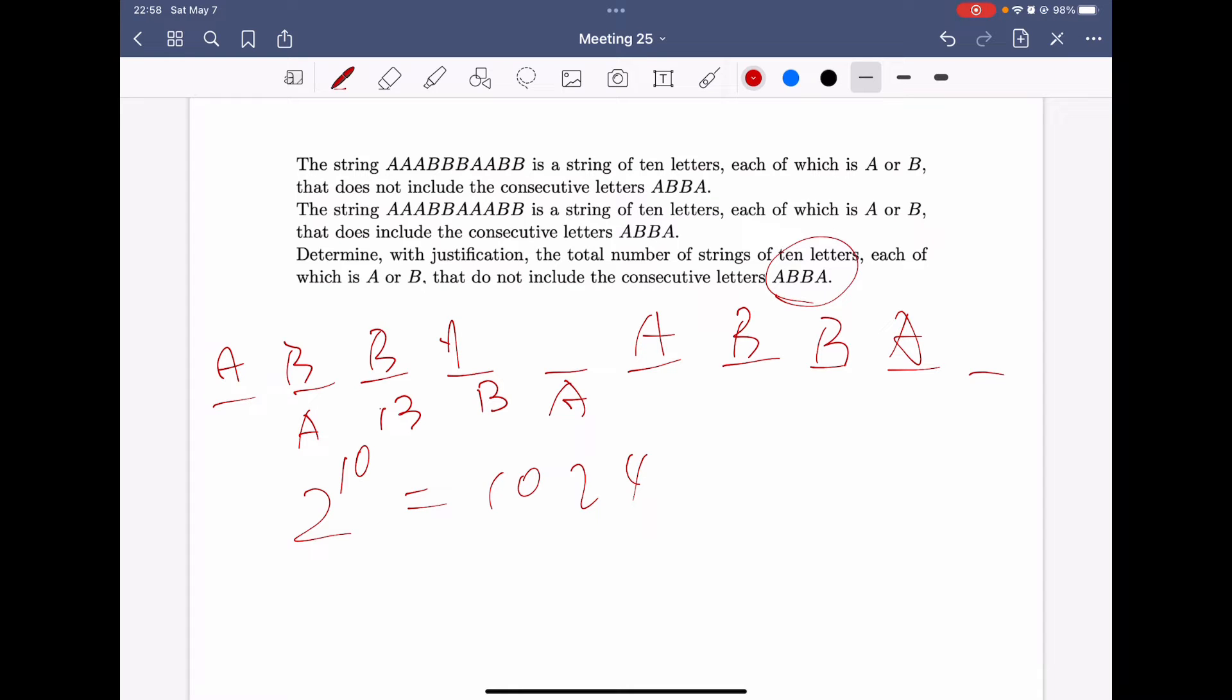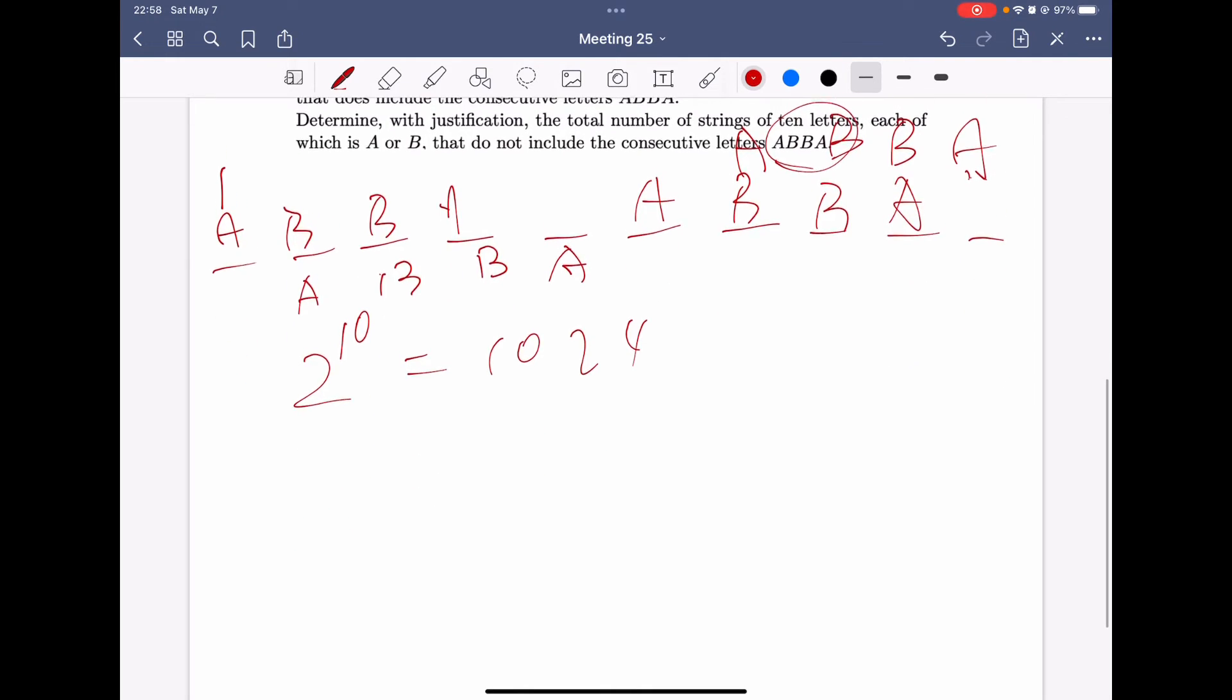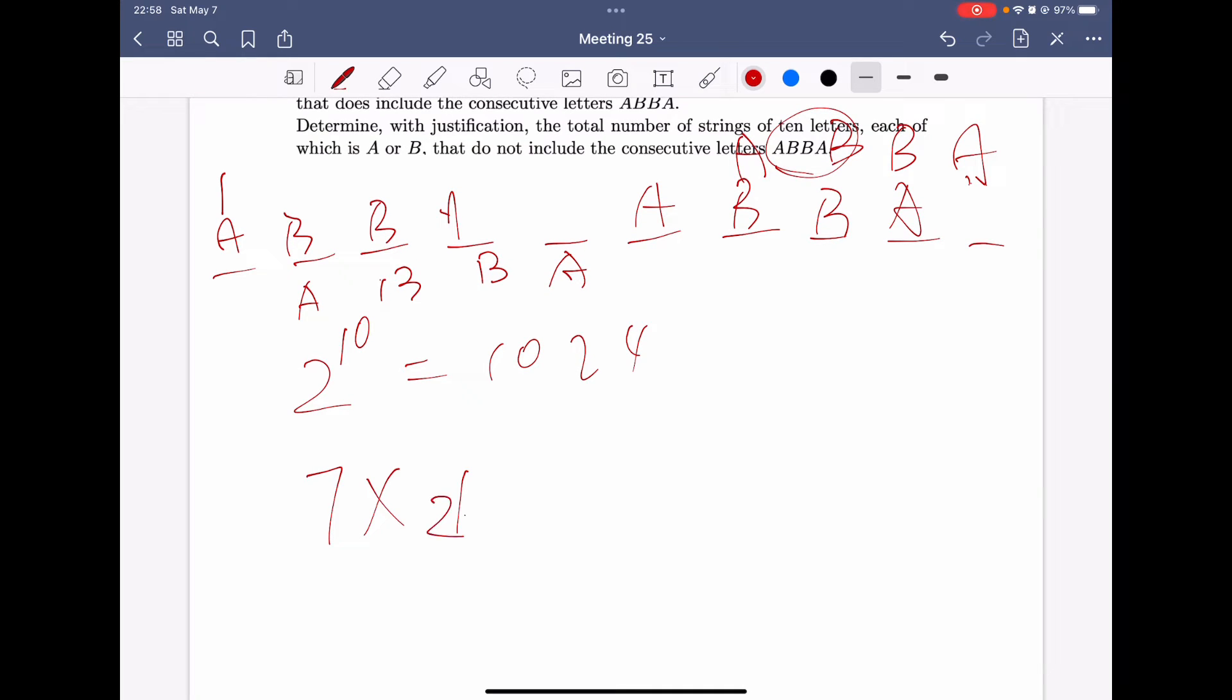So, how many, like, where can A, B, B, A start? A, B, B, A can start from the first digit to the seventh digit. Because if A starts with the seventh digit, it will be like this, because the last A is at the tenth digit. So, there are seven situations that A, B, B, A shows up. And there are six digits left, and it could be any letter from A or B. Therefore, there are seven times two to the power of six strings that contain consecutive letters A, B, B, A. So, this number is 448.